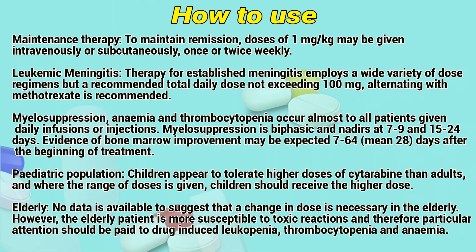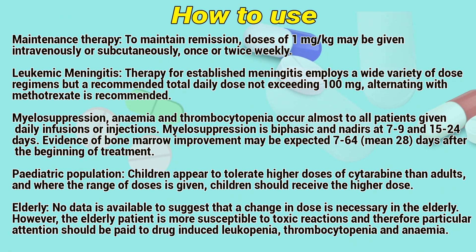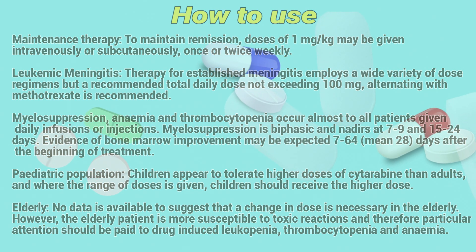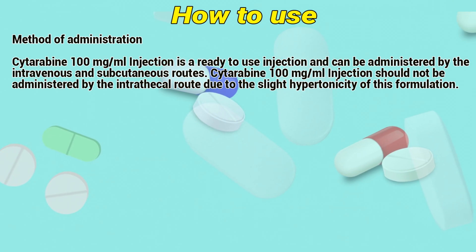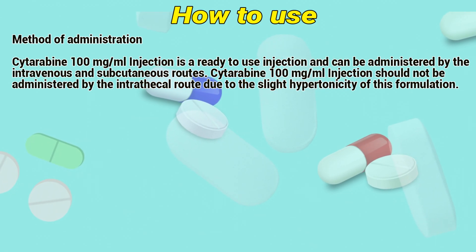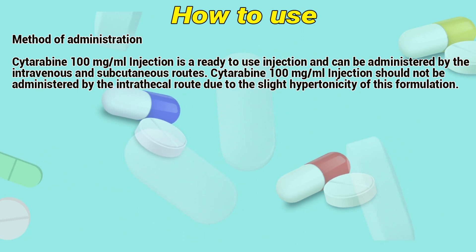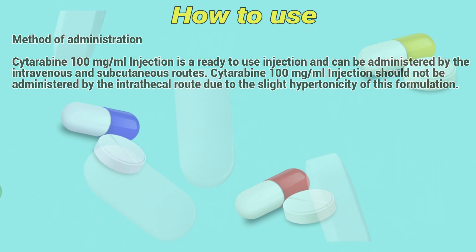Pediatric population: Children appear to tolerate higher doses of Cytarabine than adults, and whereas a range of doses is given, children should receive the higher dose. Note that there is no available evidence to suggest that a changed dose is necessary in the elderly. However, the elderly patient is more susceptible to toxic reactions, and therefore particular attention should be paid to drug-induced leukopenia, thrombocytopenia, and anemia. Route of administration: Cytarabine 100 mg per mL injection is a ready-to-use injection and can be administered by intravenous and subcutaneous routes. Cytarabine 100 mg per mL injection should not be administered by the intrathecal route due to the slight hypertonicity of this formulation.